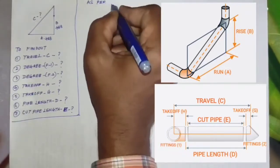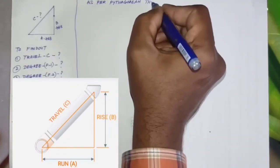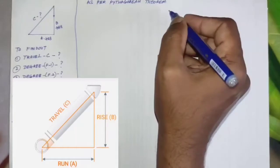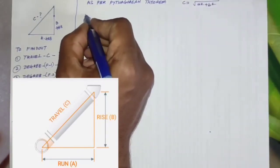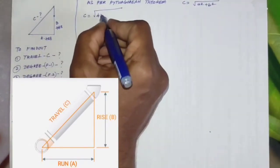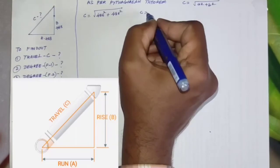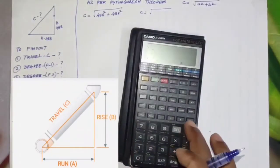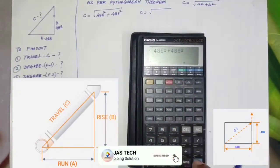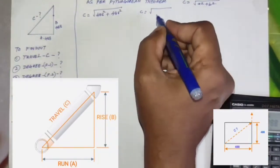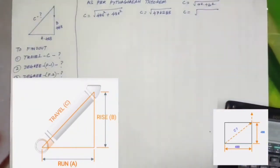As per Pythagorean theorem, C equals root of A square plus B square. As per our drawing, A equals 488 mm, so 488 square. B also 488 square. So C equals 488 square plus 488 square, it will come 476288. So again we put the root.